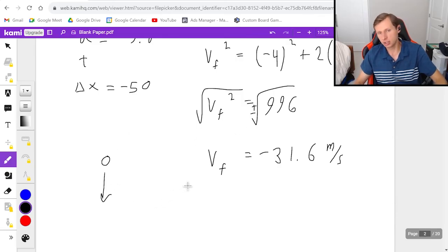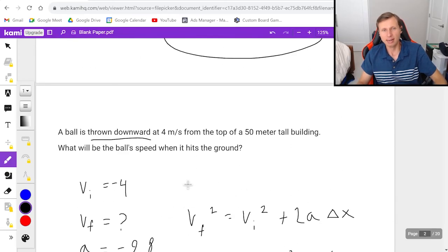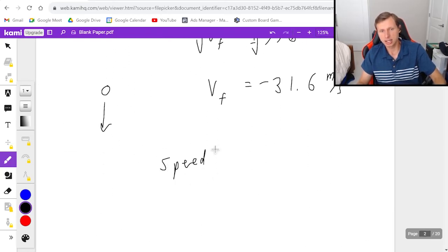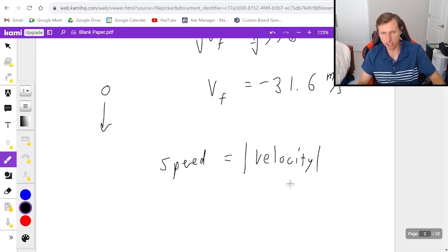In this case, we need the negative version because we're going downward. And so the final answer, and you're going to hate me now, but the final answer, since it's asking for speed, and remember, speed is just the absolute value of velocity. That's the definition. The final answer is positive after all.